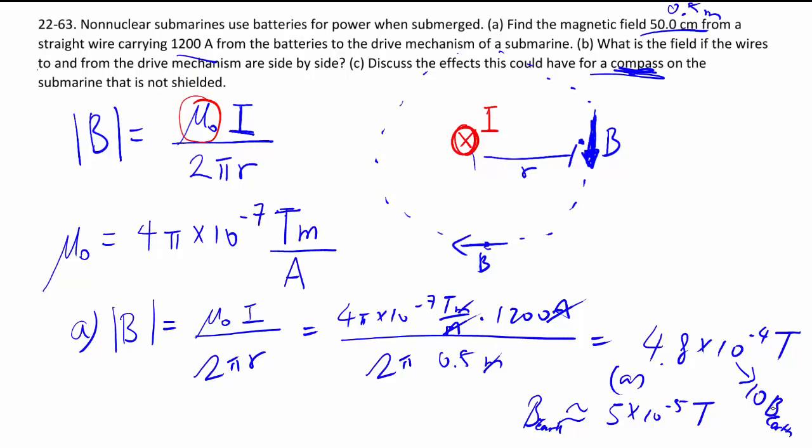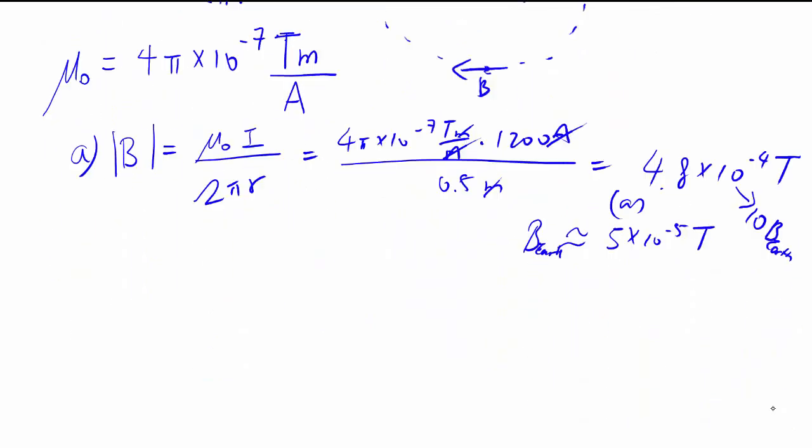If you put the wire to and from side by side, here's what's going to happen. You have one current going into the page, and then another current coming back out. And they must be the same current, because if you draw the schematic diagram...